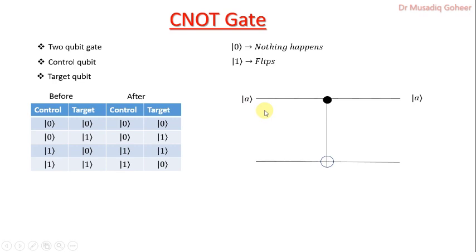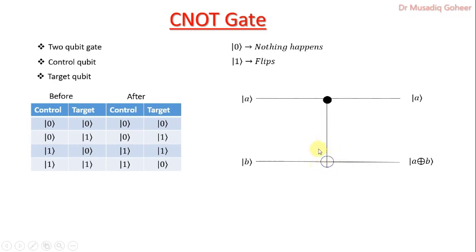Now let us talk about the symbolic diagram of the control NOT gate. This portion belongs to the input of the CNOT gate and this is the output. If input A is applied, it will remain the same at the output. The second input B will be converted to A XOR B (A plus B). This circle symbol represents the target, and whenever the control qubit is 1 it will flip the state of the target qubit.